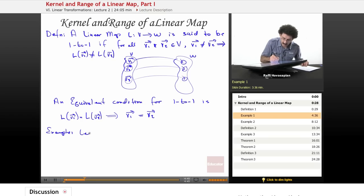Example. Let L be a mapping from R² to R², so this is a linear operator, defined by L of the vector (x,y) is equal to (x+y, x-y).